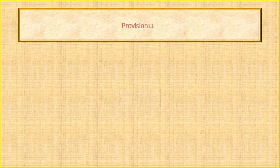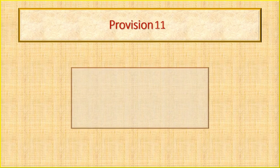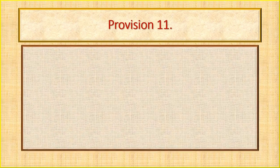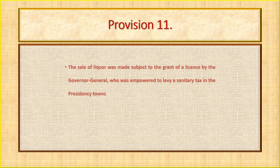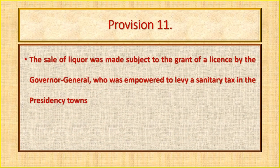As per Provision 11, the sale of liquor was made subject to the grant of a license by the governor general, who was empowered to levy a sanitary tax in the presidency towns.